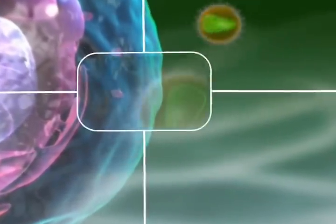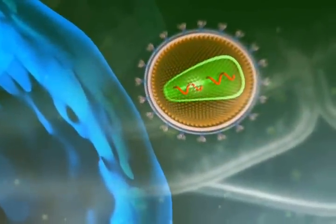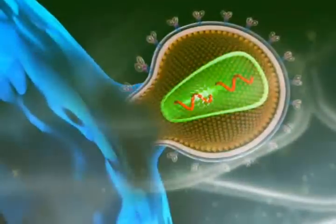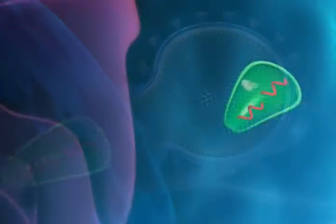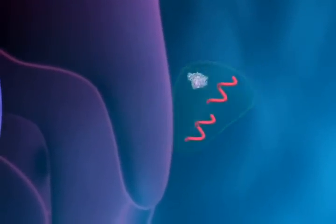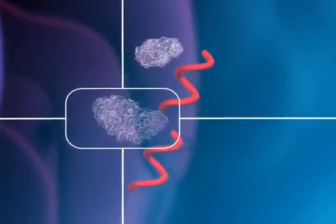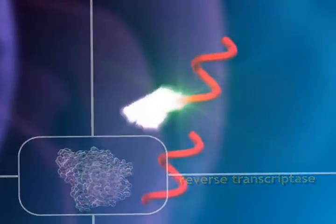To reproduce, HIV must invade an immune system cell and utilize the host cell's reproductive machinery to make copies of itself, often killing the host cell in the process.